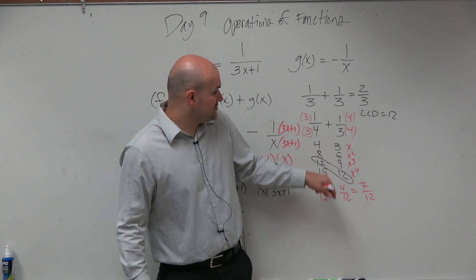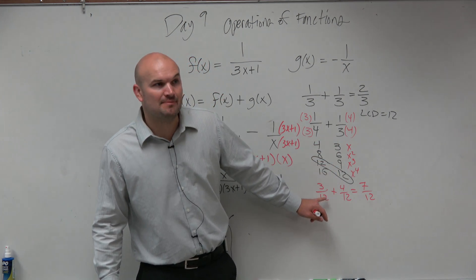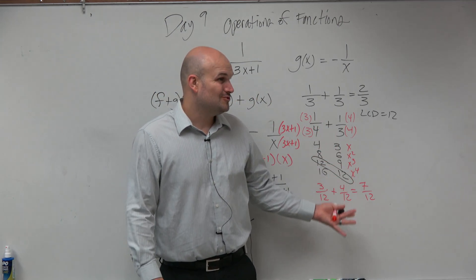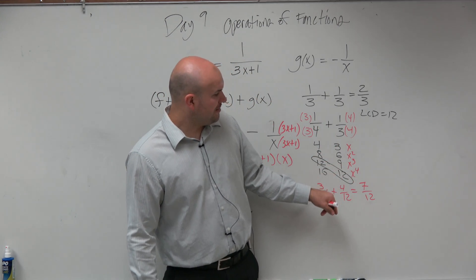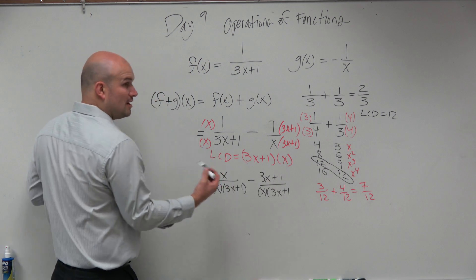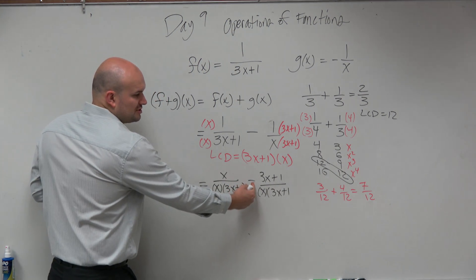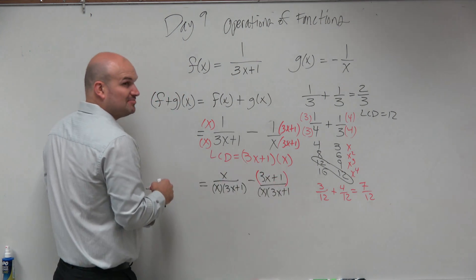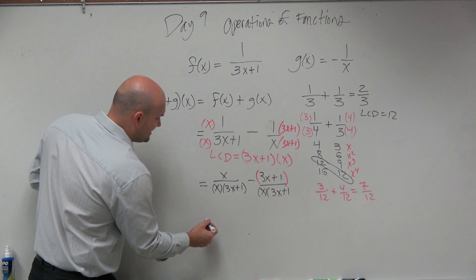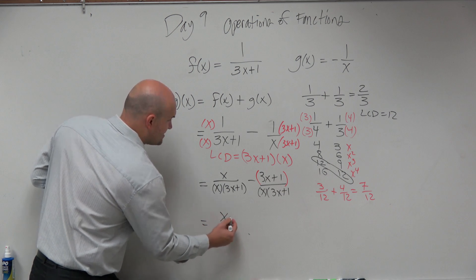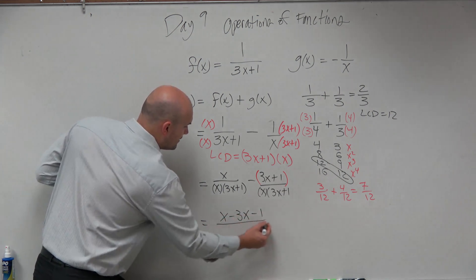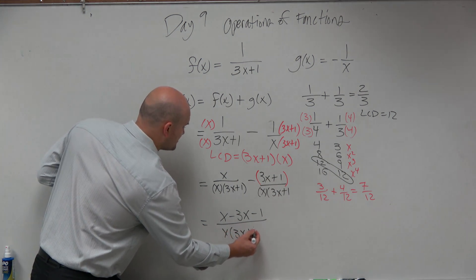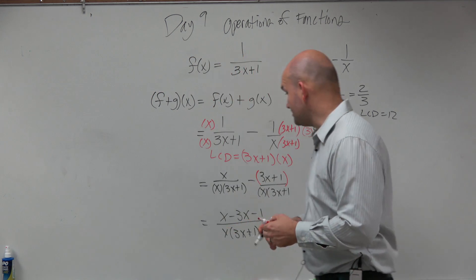Yes? And when we have two fractions with common denominators, where do we apply the operation? In the numerator or the denominator? The numerator. So all you're going to do now is just combine these. Notice that you're subtracting not 3x, you're subtracting 3x plus 1. So when you combine these, it's going to be x minus 3x minus 1 all over x times 3x plus 1.